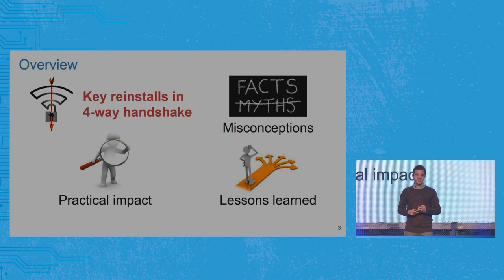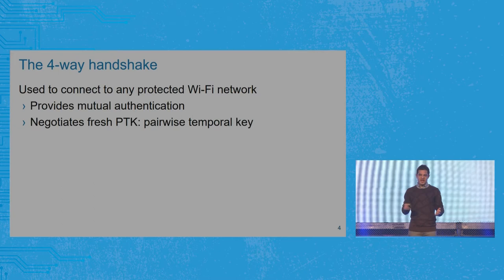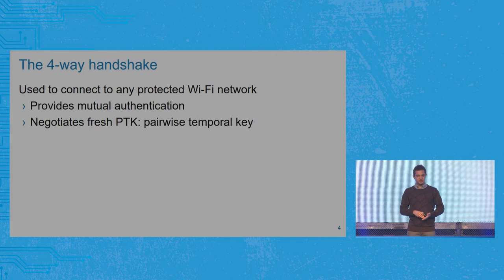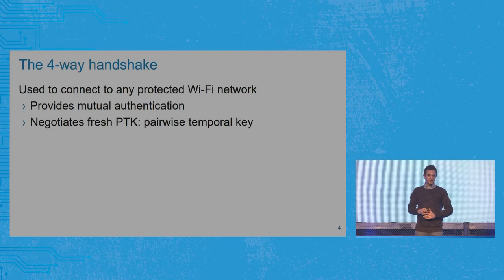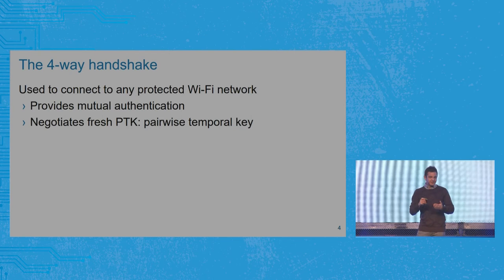Let's get started with explaining the attack against the four-way handshake. The first question is: what is the four-way handshake? In a Wi-Fi network, it is used to authenticate both the client and the access point — verifying that they possess the proper credentials. In any protected Wi-Fi network, this four-way handshake is used at one stage of the connection process. It's used in home networks where you use a pre-shared password, but also in enterprise networks where you authenticate with a username and password. Apart from that, this handshake also negotiates a fresh session key called the PTK — the pairwise temporal key — which after completion is used in the actual encryption algorithm to protect your data.